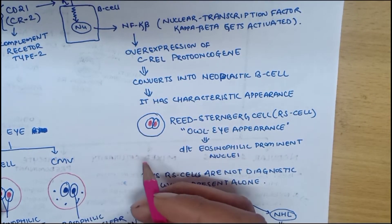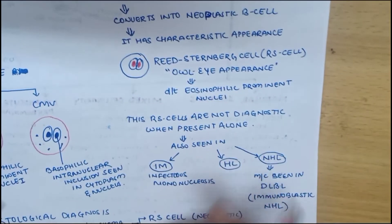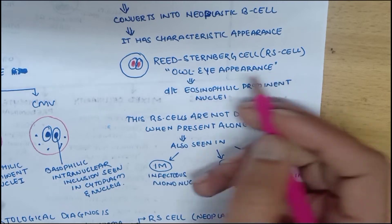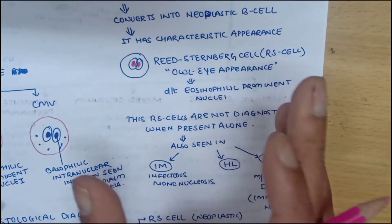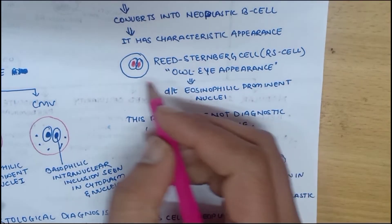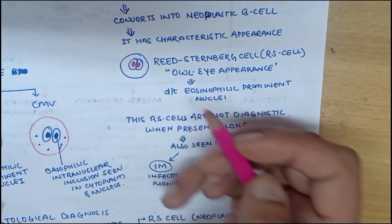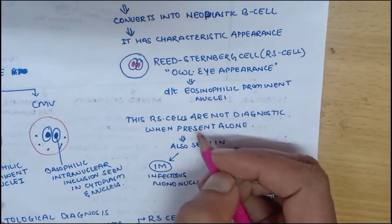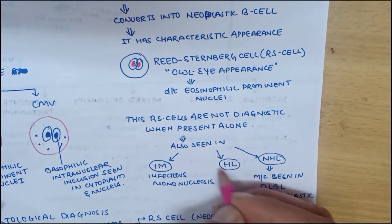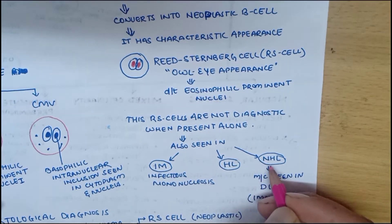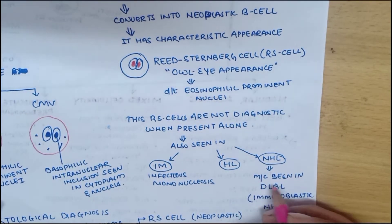However, Reed-Sternberg cells are not diagnostic when present alone. They are also seen in infectious mononucleosis, Hodgkin's lymphoma, and non-Hodgkin's lymphoma. In non-Hodgkin's lymphoma, it is most commonly seen in DLBCL, that is immunoblastic non-Hodgkin's lymphoma.